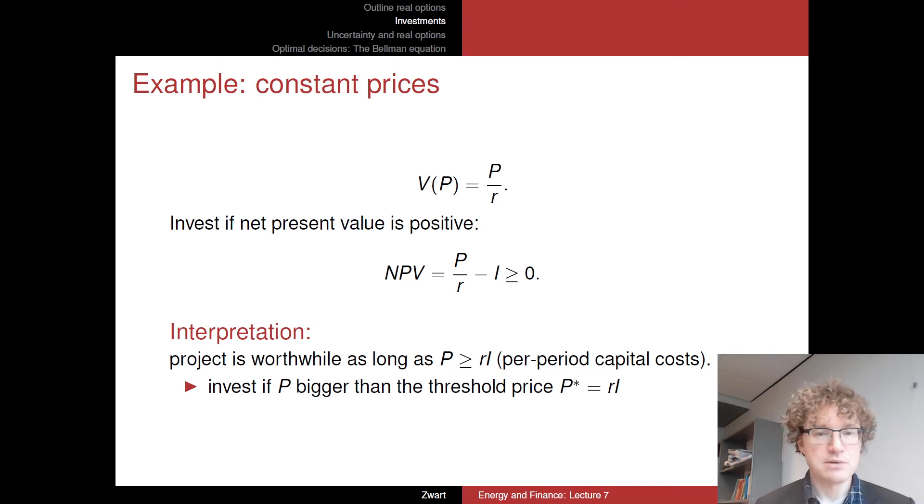So the result here is the rule, the investment rule, basically the optimal investment rule is you should invest as long as P is bigger than some threshold price, namely P. The threshold point, let's call it P star, and it should be equal to R times I. And if it's smaller than that, do not make the investment.